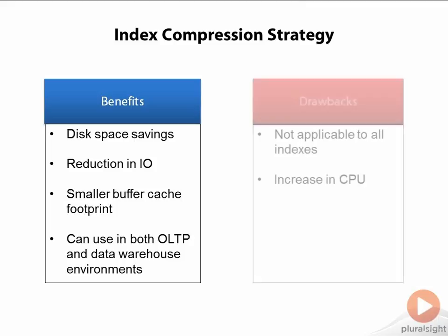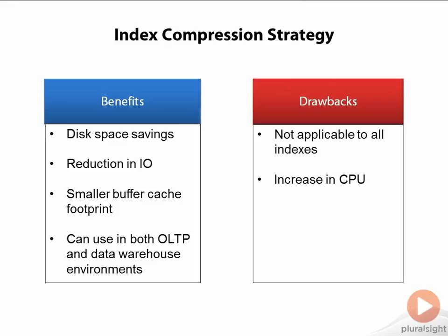On the downside, there are only some indexes that you can apply index compression to — namely those that have a lot of repeated values in the front part of the index key. If you have an index with a highly selective first column, then index compression isn't going to work and might even result in a larger index due to the overhead involved in creating the prefix value. Second, you will see a slight increase in CPU usage with index compression, because when Oracle encounters the prefix value in the index, it needs to decode the prefix back into the actual value for the index key. So if your system is already CPU bound, index compression is probably not the answer. But if you do have CPU available, what you are essentially doing is trading an increase in CPU for a reduction in I/O — and whether this is a performance benefit for your situation is something that only testing can reveal.